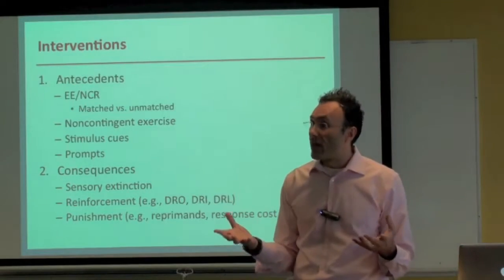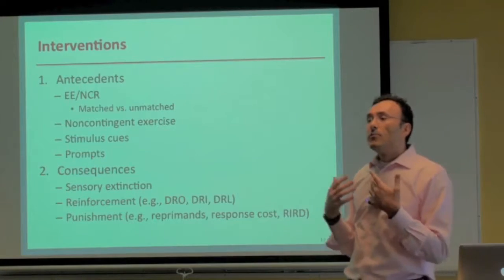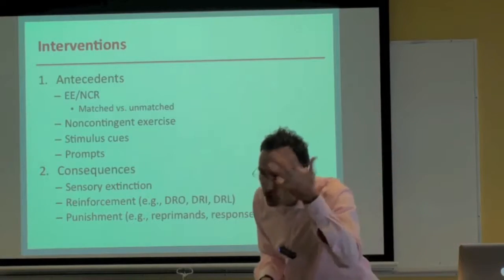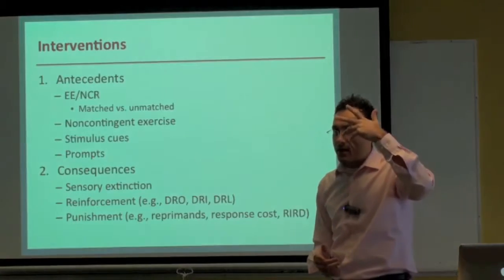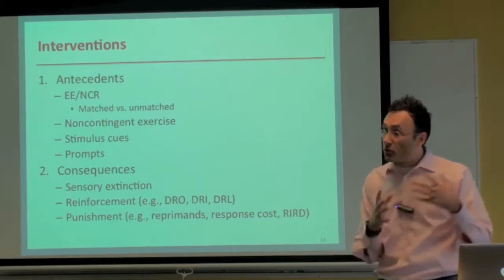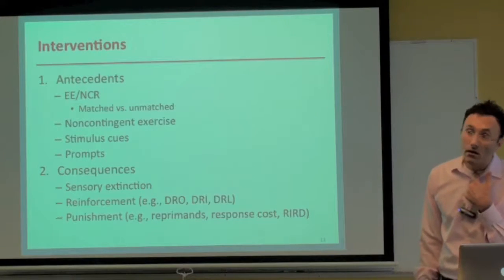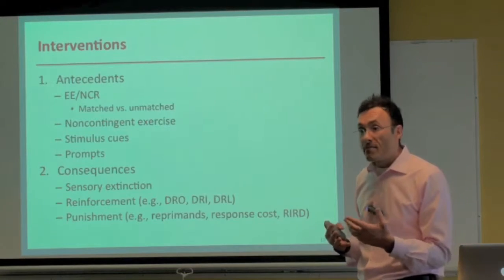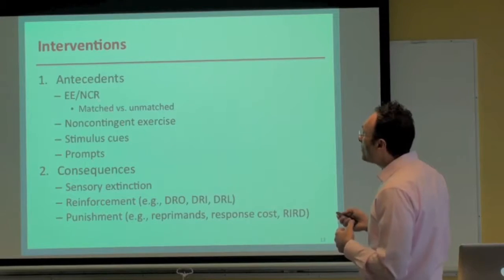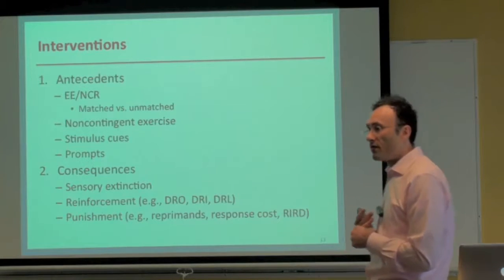With environmental enrichment, we embed highly preferred stimuli, which can be matched or unmatched to the putative reinforcer maintaining the person's stereotypy. For example, if someone is constantly looking at their fingers — possibly seeking visual stimulation — I might embed visual stimulation as part of the enriched activities. If someone makes vocal stereotypy, I might embed sound activities like listening to a radio. Unmatched means the enriched stimulus in no way relates to the reinforcing value of the stereotypy.